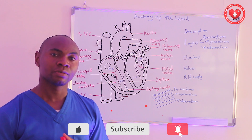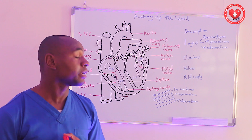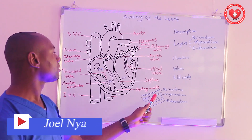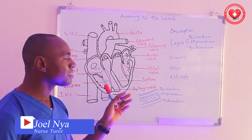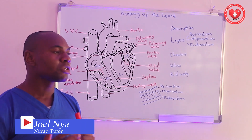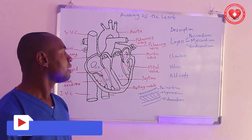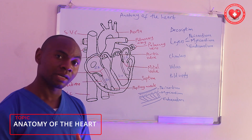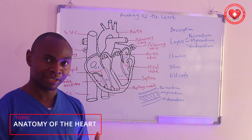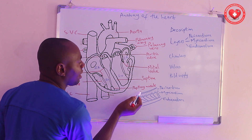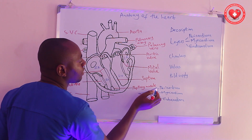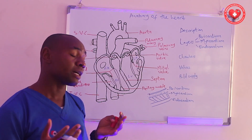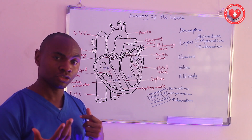Now let's look at the layers that make up the heart. The heart is made up of three distinct layers: the pericardium, the myocardium, and the endocardium. The pericardium is the first and outermost layer of the heart, made up of dense fibrous tissue. It is divided into two sub-layers: the parietal pericardium and the visceral pericardium. The parietal pericardium lines the outer part and is responsible for the protective covering of the heart, and it also prevents over-distension of the heart.